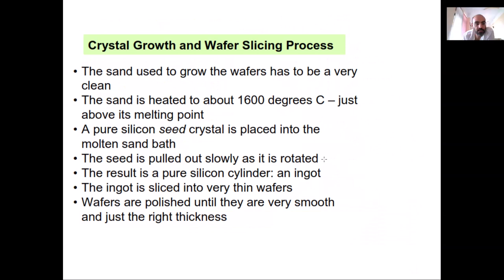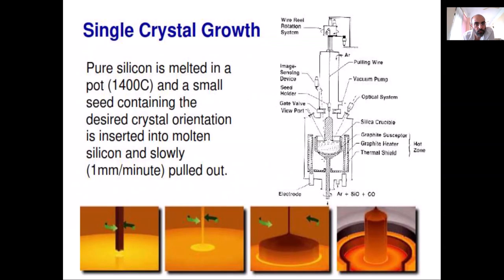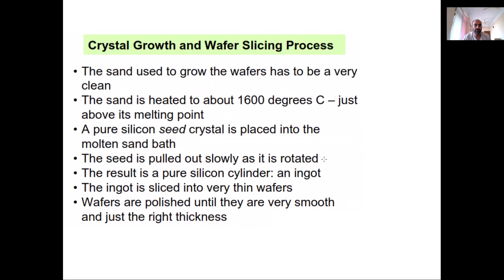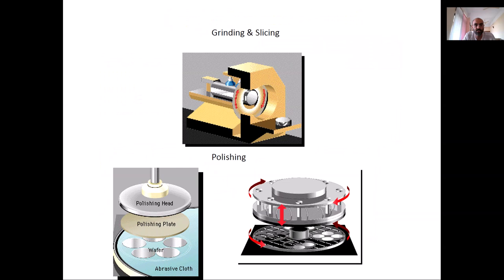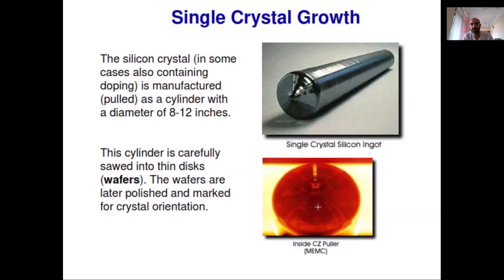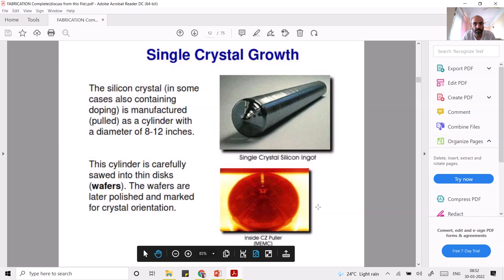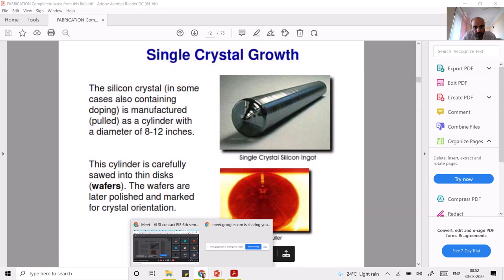The Czochralski process gives a pure single crystal silicon cylinder called an ingot. The non-uniform diameter portions at the ends are cut away and discarded. The uniform ingot is then sliced into wafers using diamond-tipped tools because the ingot is very hard and precise slicing is needed. The wafers are then mechanically polished to a mirror finish using chemical mechanical polishing (CMP). We will cover wafer slicing in the next lecture.